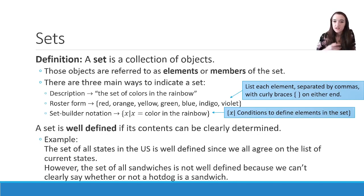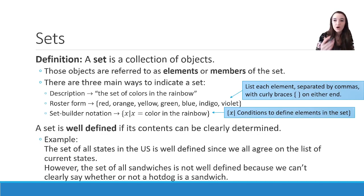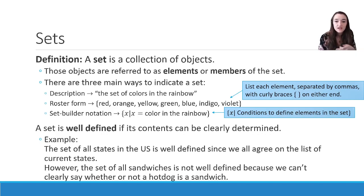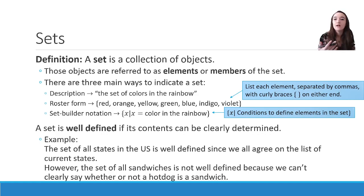A set is well defined if its contents can be clearly determined. For example, the set of all states in the US is well defined since we all agree on the list of current states. We know the 50 states — even if you can't list all 50 of them, if I name a state like Ohio, you can tell me yes or no. However, the set of all sandwiches is not well defined, because we can't clearly say whether or not a hot dog is a sandwich. Some people are going to say yes, some people are going to say no — there isn't a good definition to say one way or the other. Not everybody agrees, so it's not well defined.